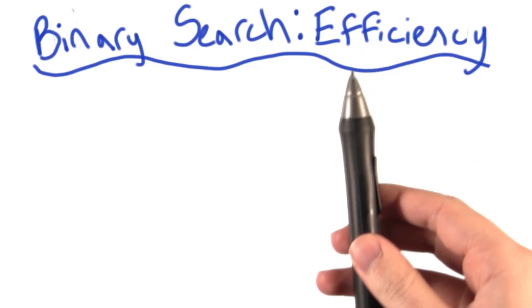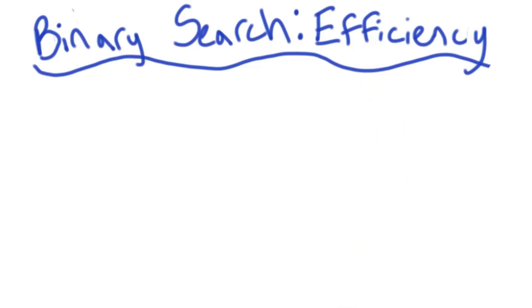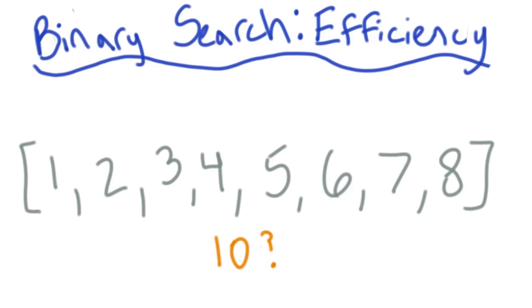Let's start talking about the efficiency of this algorithm with a new example. Here we have an array with eight elements and we're going to try and find the number 10.